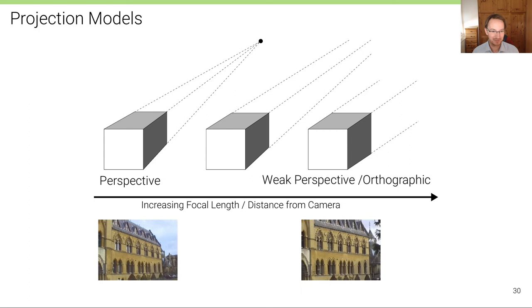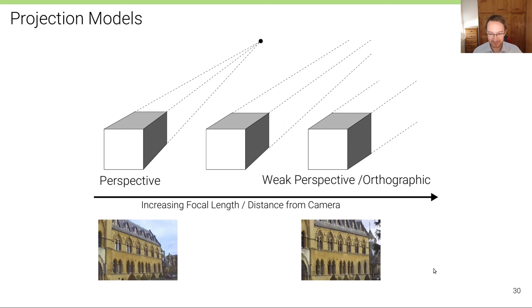At the bottom you can see two examples of perspective versus orthographic (or near-orthographic) projection of a real scene. To describe these projections mathematically, we use a coordinate system where the illustrations show only the X and C (depth) coordinates — the Y coordinate goes into the image plane and is difficult to draw in 3D, so everything is shown as a cut in the X and C dimensions.